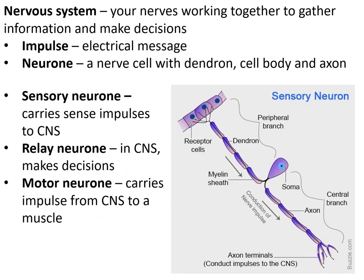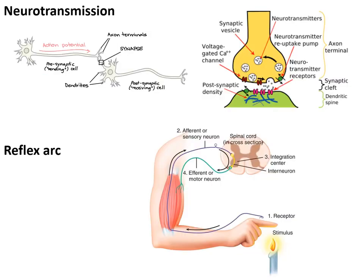The nervous system collects information and makes decisions based on electrical impulses that travel down nerve cells called neurons. Sensory neurons gather information from the senses. Relay neurons in the brain and spinal cord — the central nervous system — make decisions. Motor neurons carry messages from the CNS to the muscles. Neurotransmission is passing a nerve impulse between cells via chemicals called neurotransmitters across a synapse.